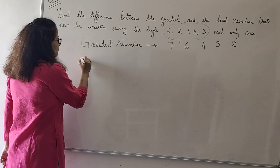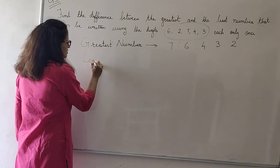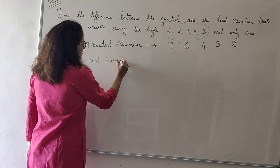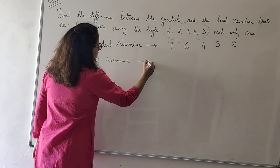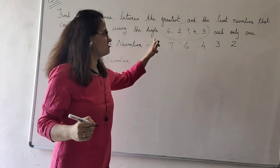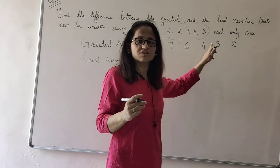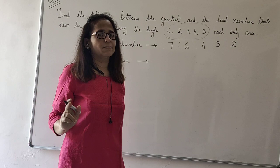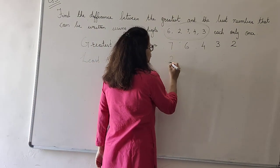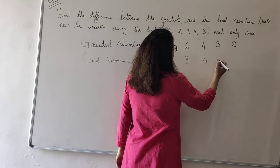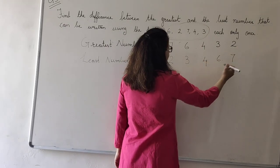Again, when I form the least number, I will arrange these digits in ascending order. Ascending order means from the smallest number to the biggest number. Here the smallest number is 2, then comes 3, then comes 4, then is 6 and 7.